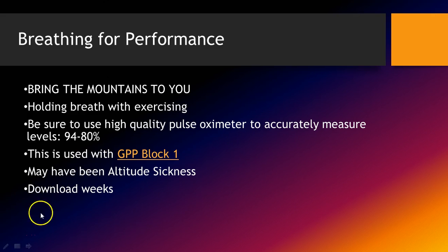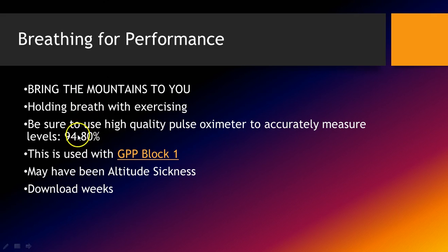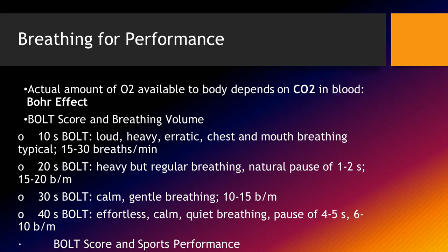For breathing for performance, one thing I mentioned in previous videos is that you can decrease oxygen saturation levels, and I did this with great results in fitness ability. We did this in GPP Block 1 — you can click on that. Some athletes showed altitude sickness signs after the workout from holding their breath. We hold the breath with all the air pushed out of the lungs, especially on download weeks, doing it every third or fourth exercise in the circuit.